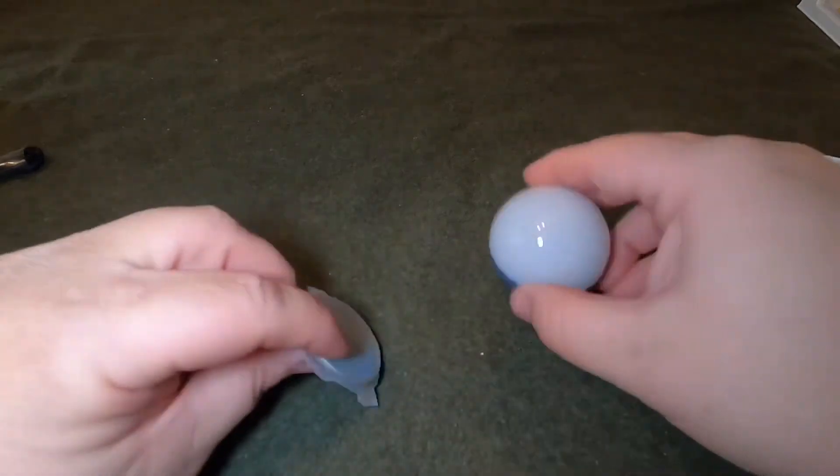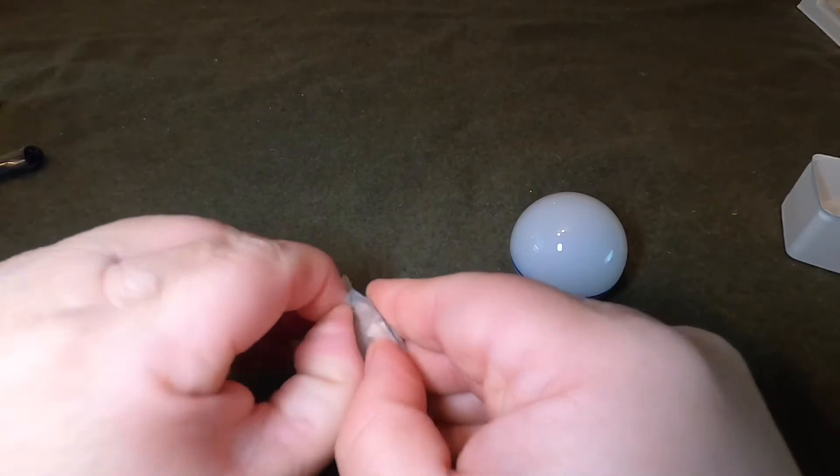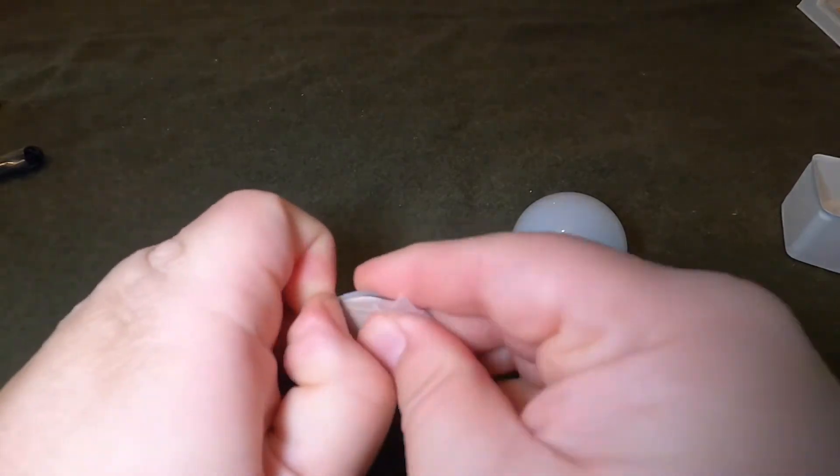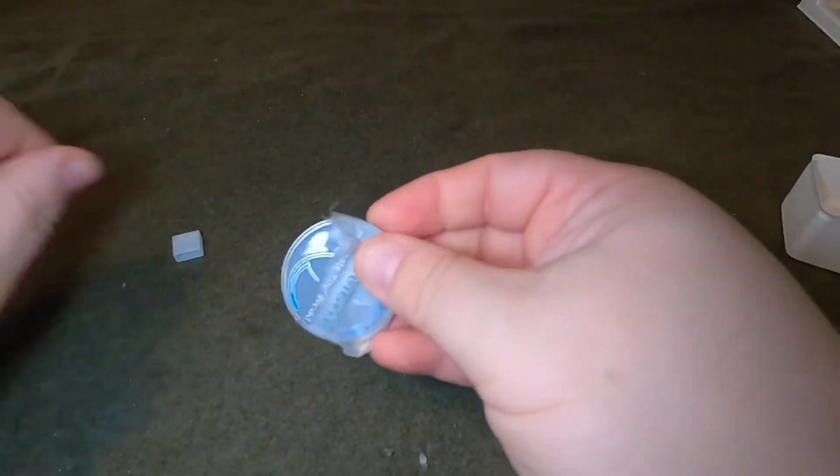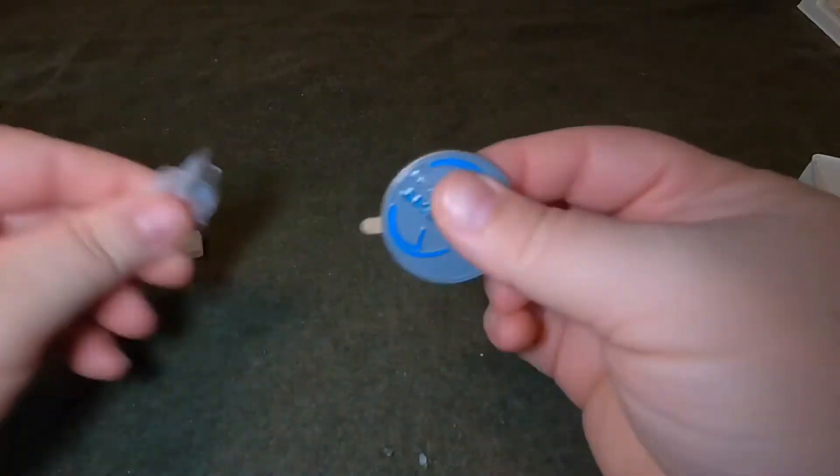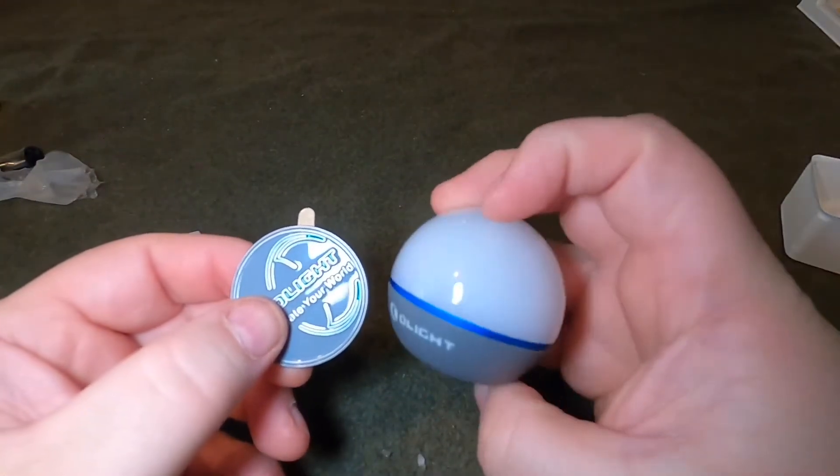So the little medallion is magnetic and let me get it out of the package here and show you. It's really a really strong little bag here. So a little medallion. It's color coded to the light. Like I said, these come in a variety of colors.